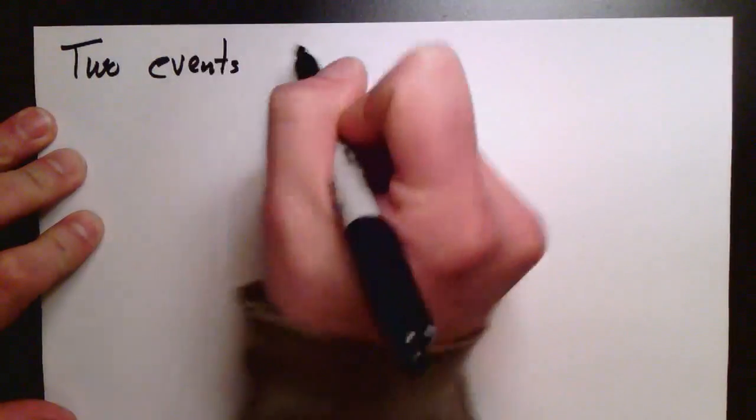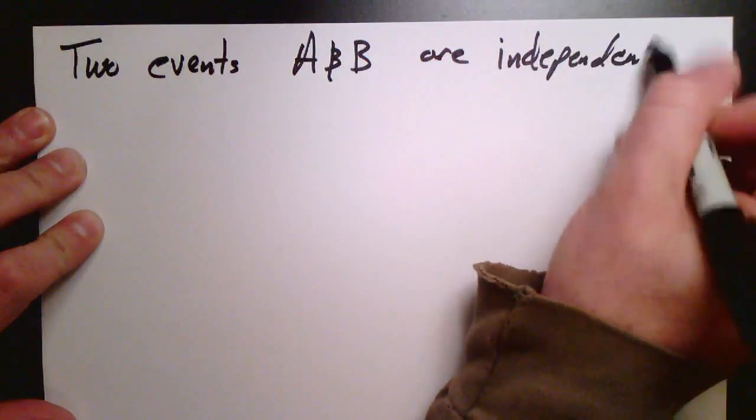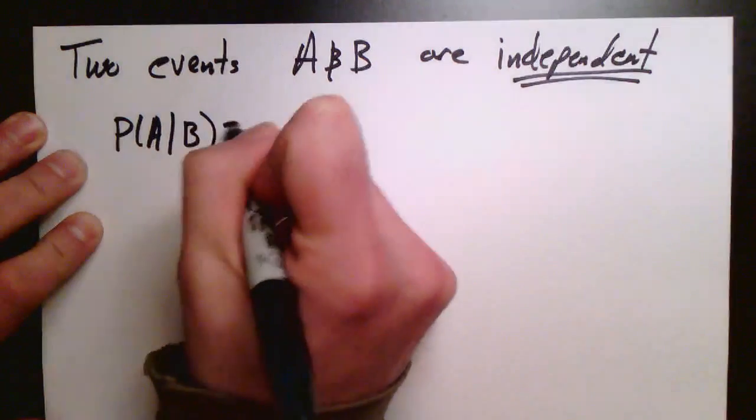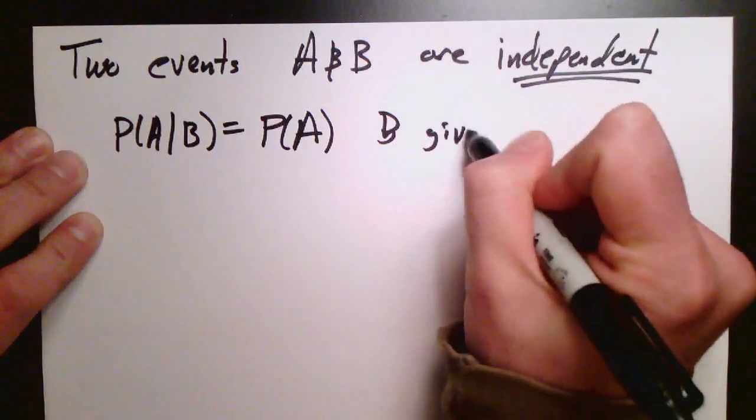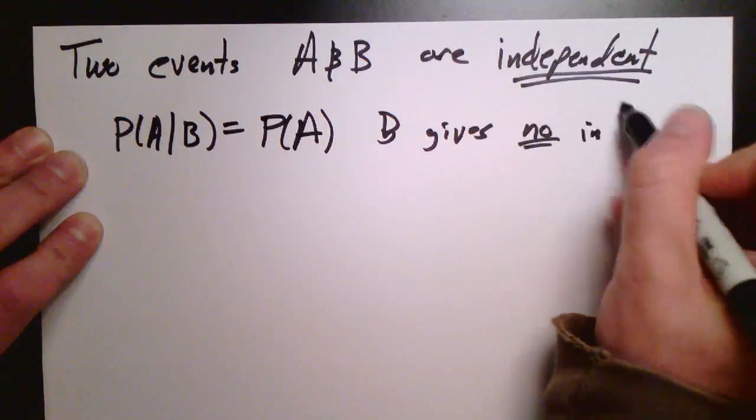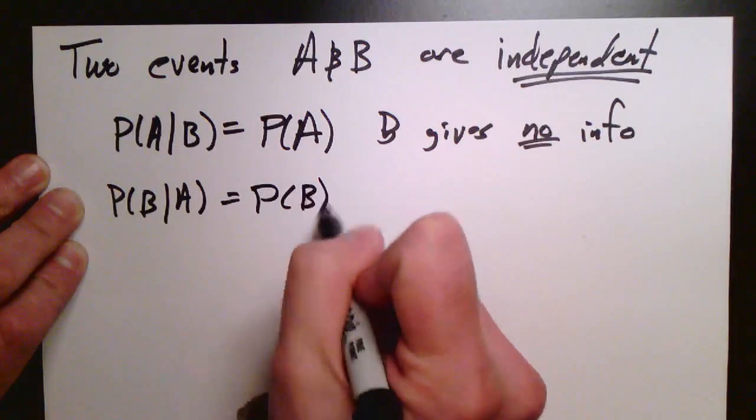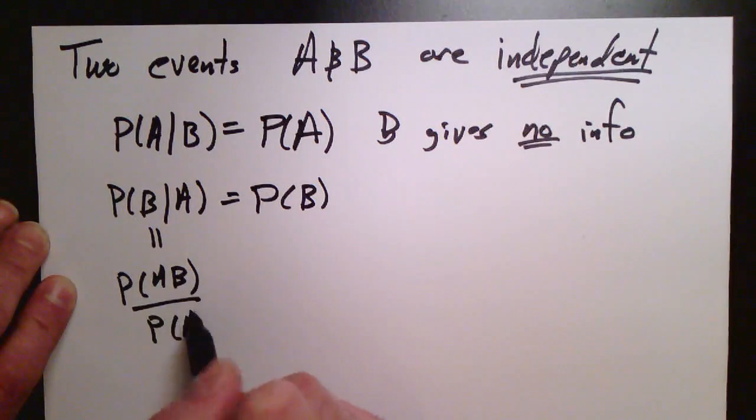Now, related to this is the idea of independence. So two events A and B are independent if somehow knowing that one happens tells you nothing about whether the second one happens. In particular, the probability of A given that B happened already is just A. That means that knowing that B happened doesn't tell you anything, doesn't change the probability of A happening. And symmetrically, this is the probability of B given A is just the probability of B.